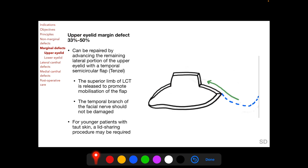An upper eyelid margin defect of between 33% and 50% can be repaired by advancing the remaining lateral portion of the upper eyelid with a temporal semi-circular flap called a tensile flap, which is convex downwards. The superior limb of the lateral canthal tendon can be released to promote mobilization of the flap, and while making this flap, the temporal branch of the facial nerve should not be damaged. For younger patients with taut skin, this mobilization may not be possible, and a lid-sharing procedure may be necessary even for a defect between 33% and 50%.